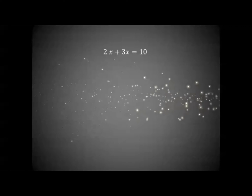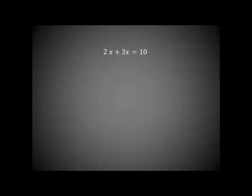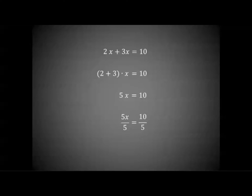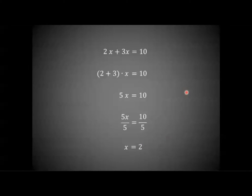Let's look at a specific example. If we have the equation 2x plus 3x equals 10, these are like terms that can be combined together. We know that 5x over 5 simplifies to x, equal to 10 over 5, which by our facts of numbers simplifies to 2.